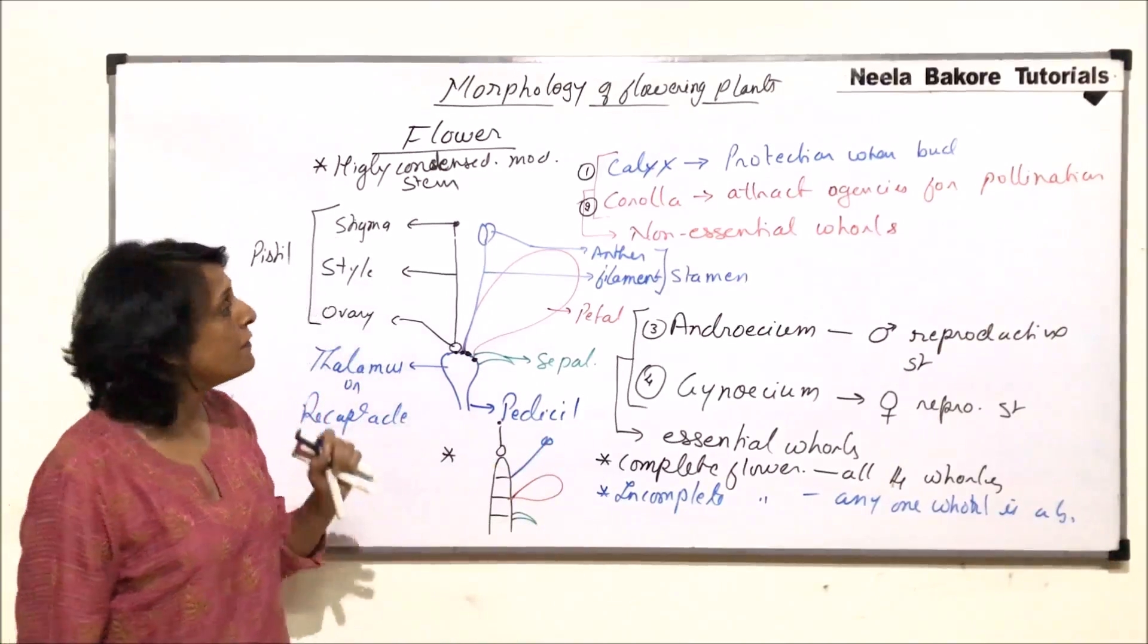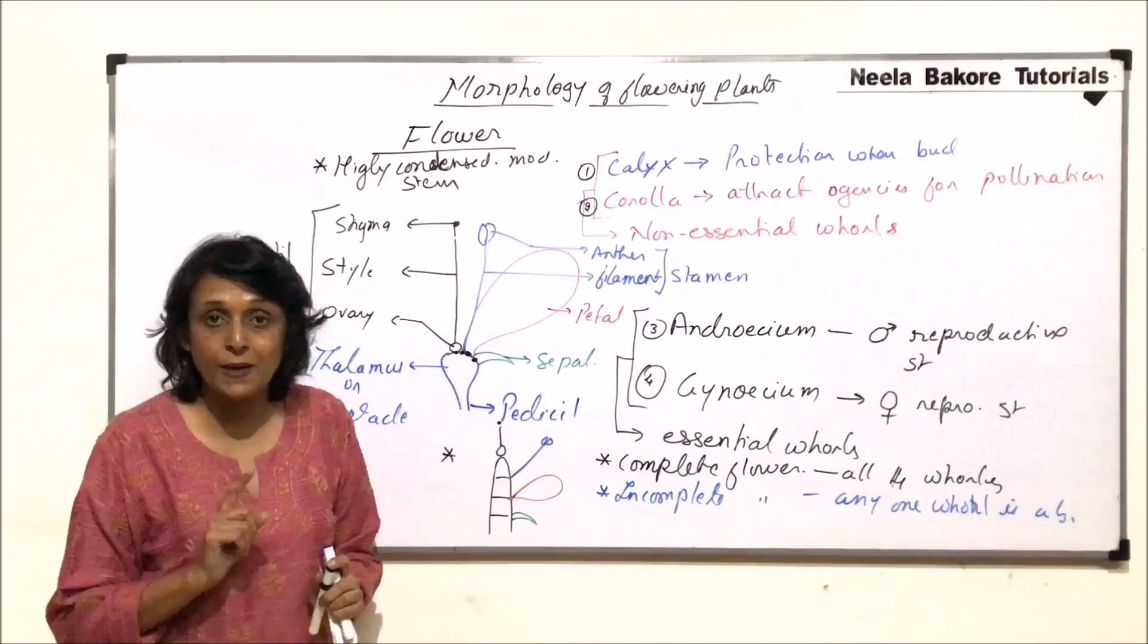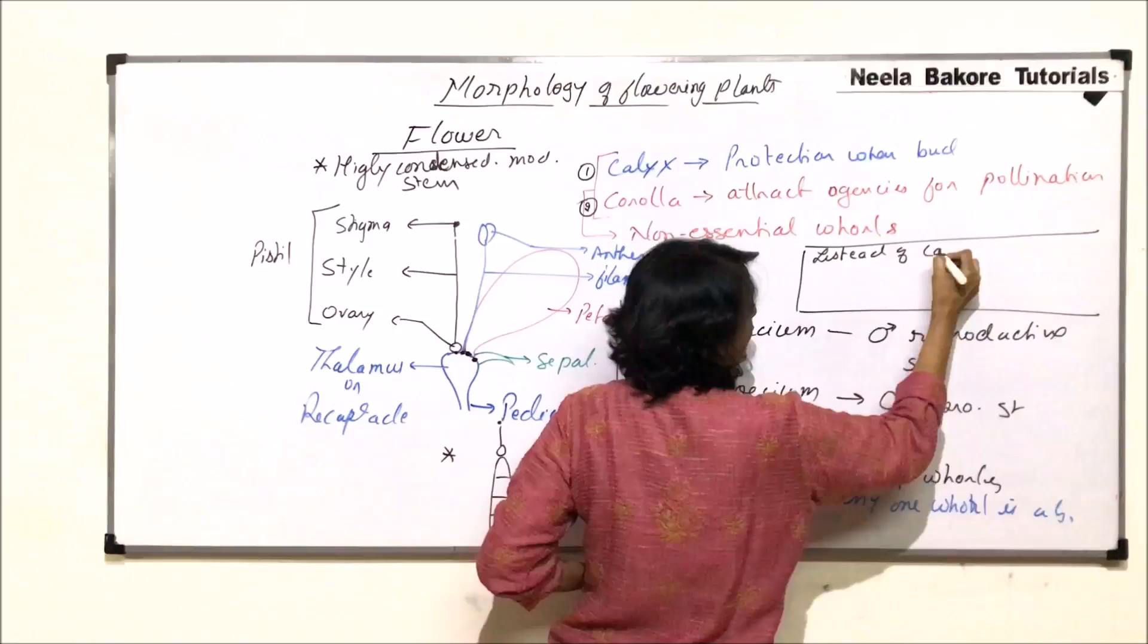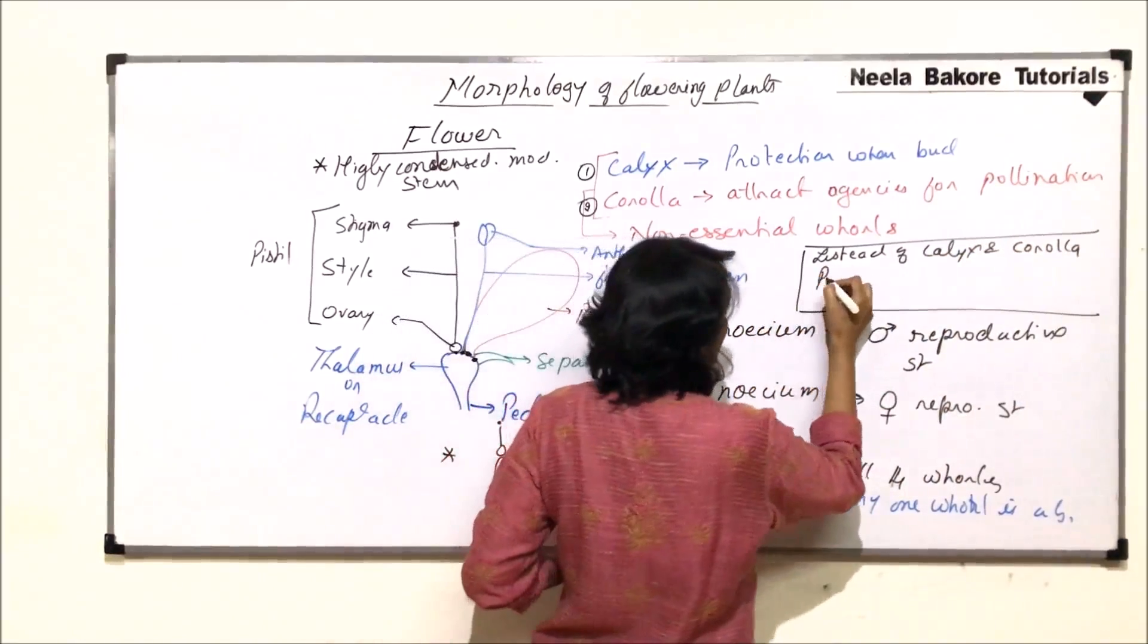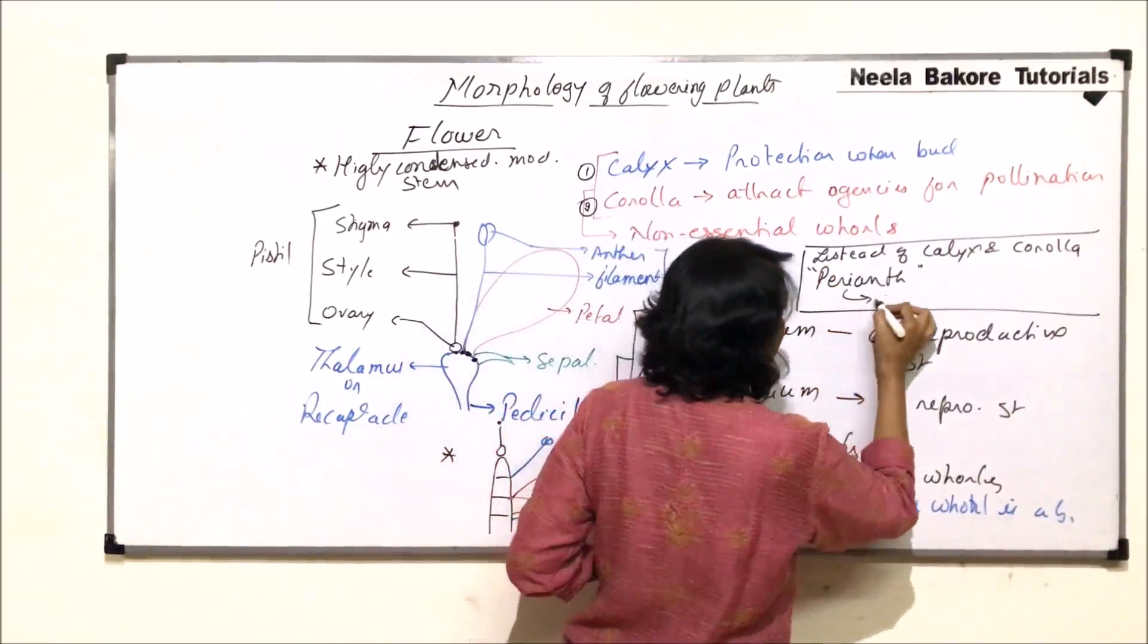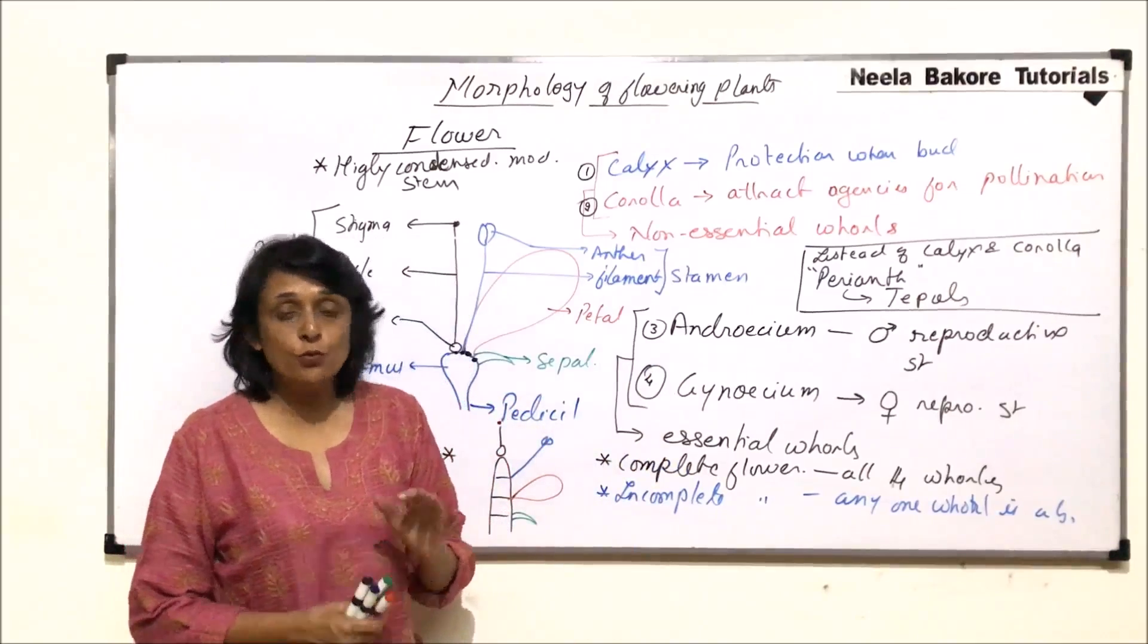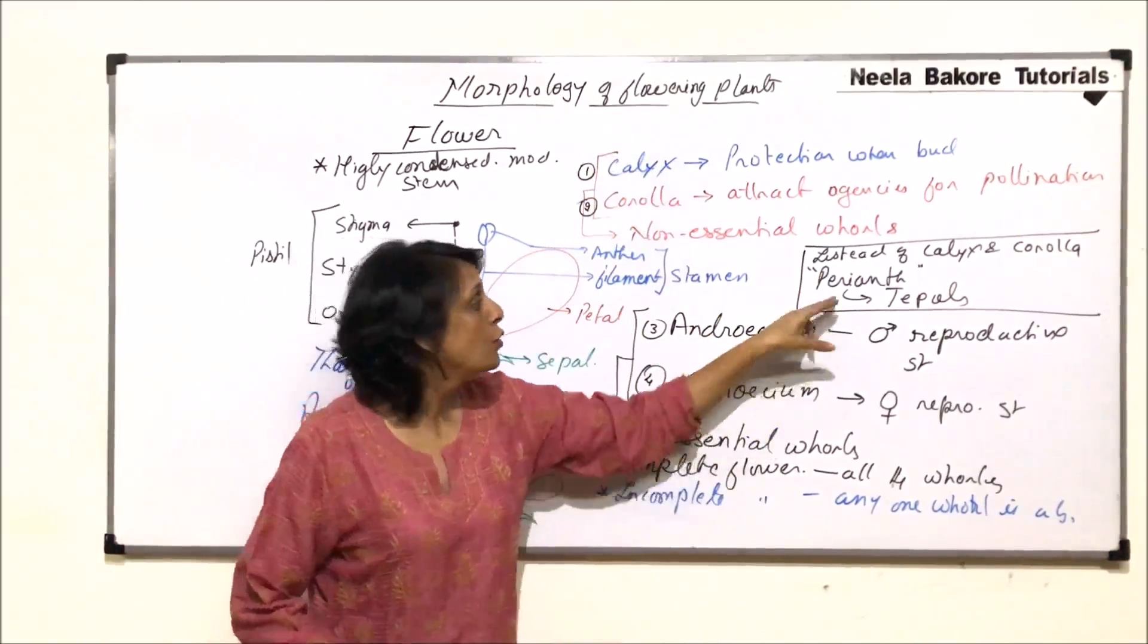In some cases, we find that instead of calyx and corolla, instead of these two whorls, there is only one whorl present. And that is known as perianth. This is instead of calyx and corolla, there is a different whorl which is called perianth. And individual members of perianth are known as tepals. Like individual members of calyx were called sepals. Here, they are called tepals. There is a confusion many a times that some people think that it is calyx and corolla which is fused to form perianth.